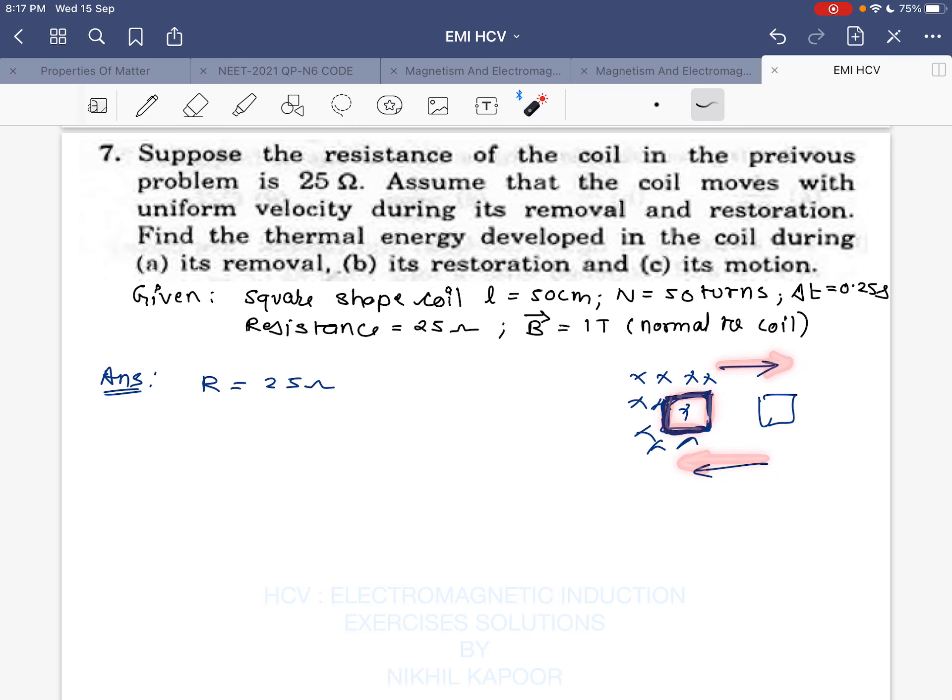Find the thermal energy produced in the coil. The EMF produced will be the average EMF, which is change in flux with respect to time. Initially the flux is NAB, while the final flux is zero because when it is taken away flux will be zero, and when it is in the field it will be NAB.